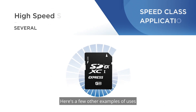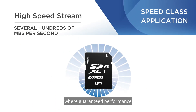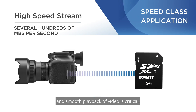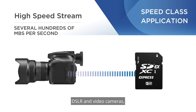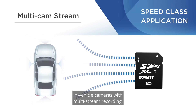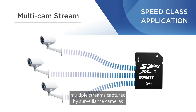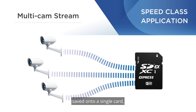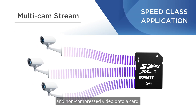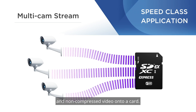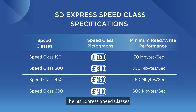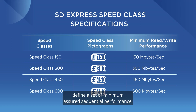Here are a few other examples of uses where guaranteed performance and smooth playback of video is critical: DSLR and video cameras, in-vehicle cameras with multi-stream recording, multiple streams captured by surveillance cameras saved onto a single card, and funneling high-resolution and non-compressed video onto a card.